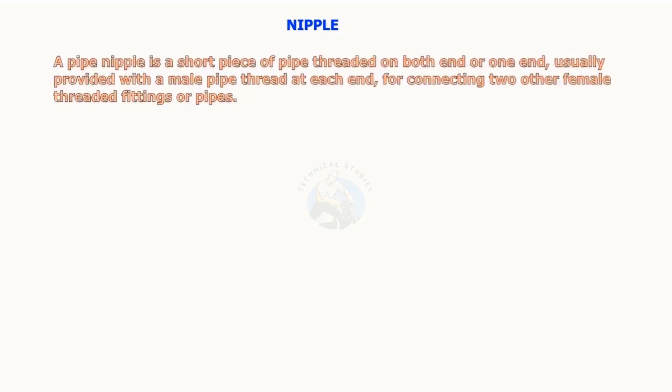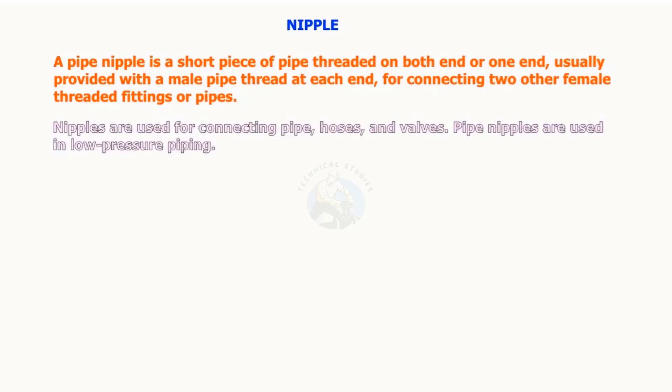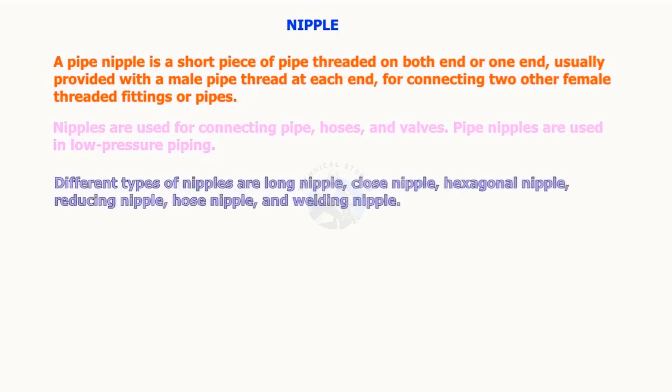A pipe nipple is a short piece of pipe threaded on both ends or one end, usually provided with a male pipe thread at each end for connecting to other female threaded fittings or pipes. Nipples are used for connecting pipe, hoses, and valves. Pipe nipples are used in low pressure piping. Different types of nipples are: long nipple, close nipple, hexagonal nipple, reducing nipple, hose nipple, and welding nipple.